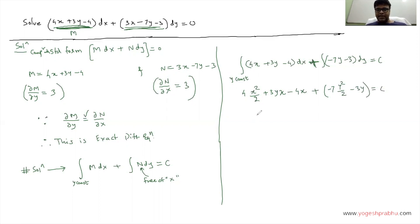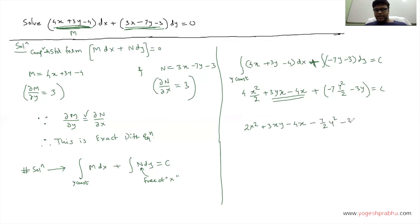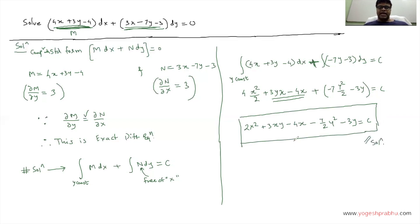We can club the terms and simplify. The final answer is: 2x² + 3xy − 4x − (7/2)y² − 3y = C. This is the solution to the differential equation. I hope you followed this.